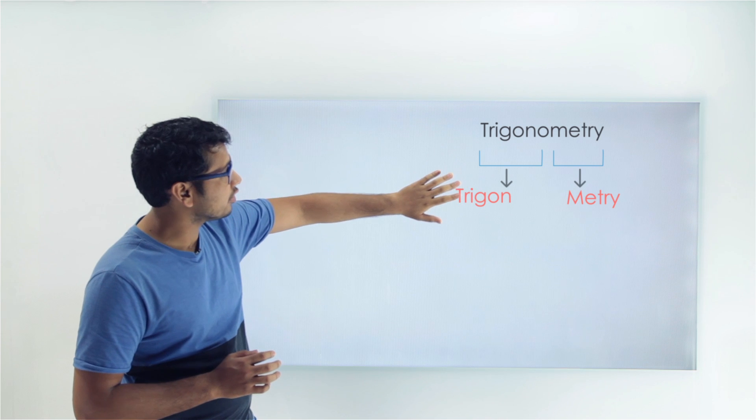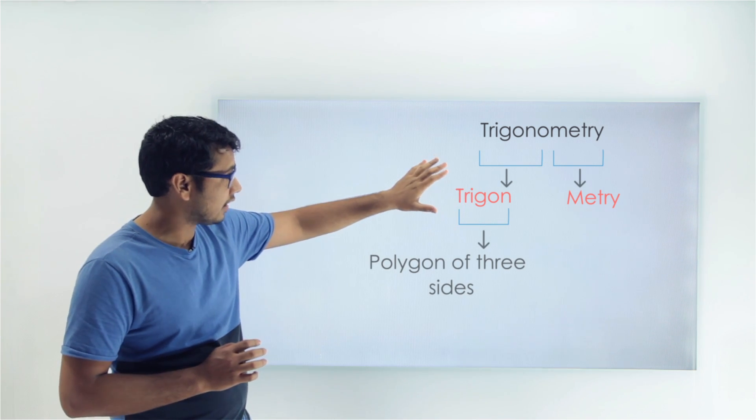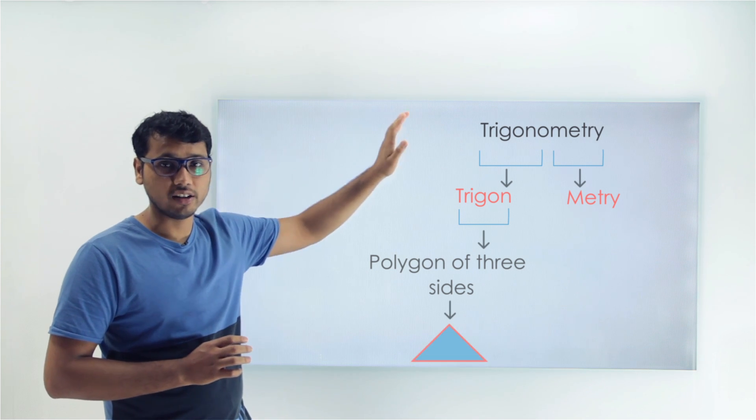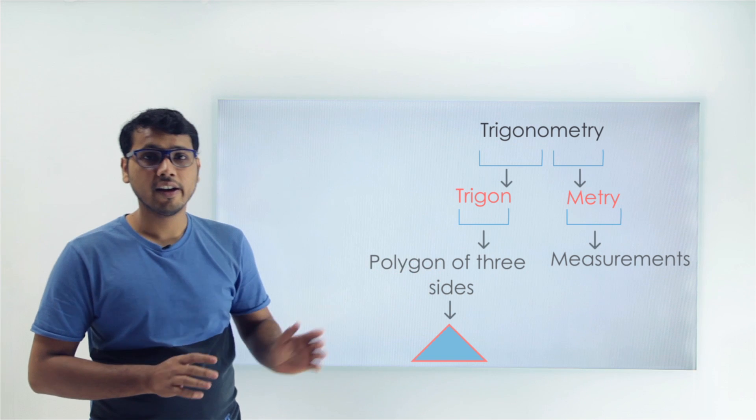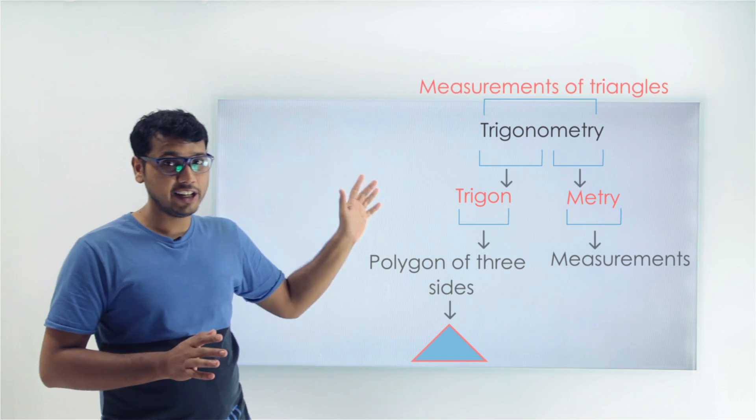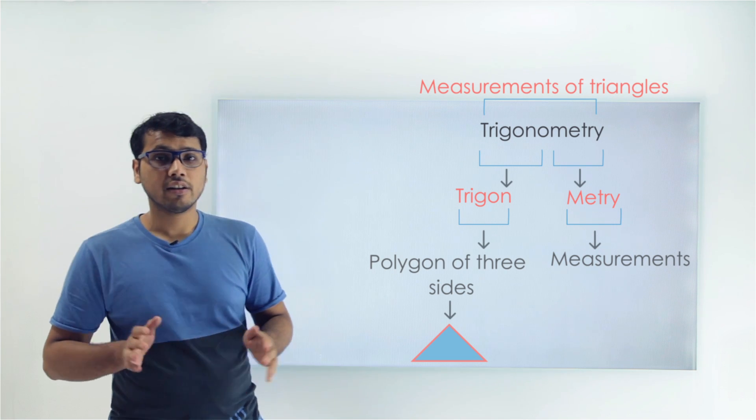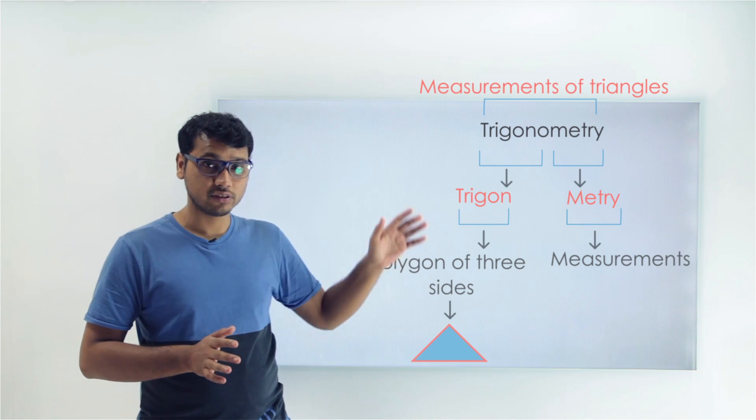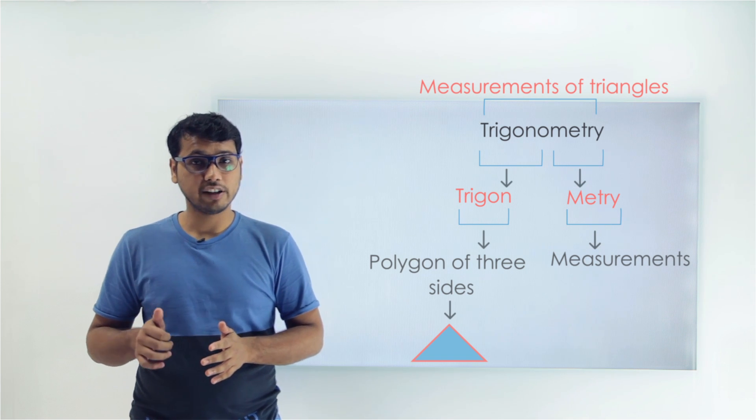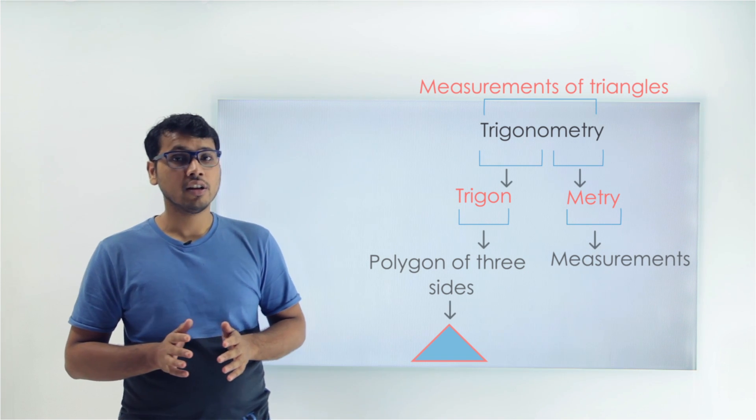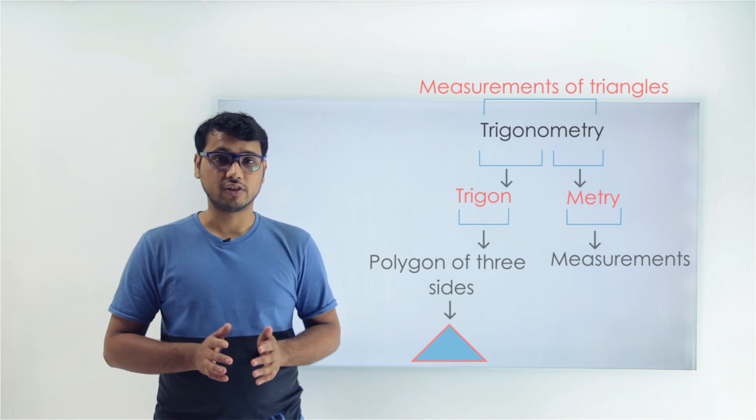The word trigon refers to a polygon which has three sides - a triangle. The wordometry means measurement. So basically, trigonometry deals with the measurement of triangles. It deals with the different measurements of the sides and angles of a triangle. It also gives us ratios which link the different sides of a triangle to different angles of the triangle.